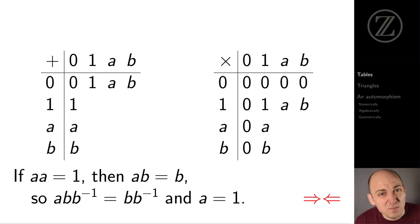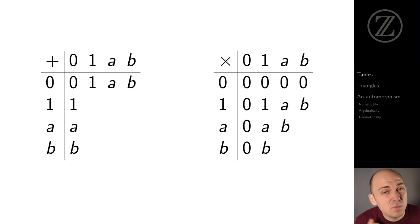AB equals B implies A is 1. But again, A isn't 1. So it must be that A times A is B. That forces A times B and B times A to be 1. And finally, it forces B times B to be A.